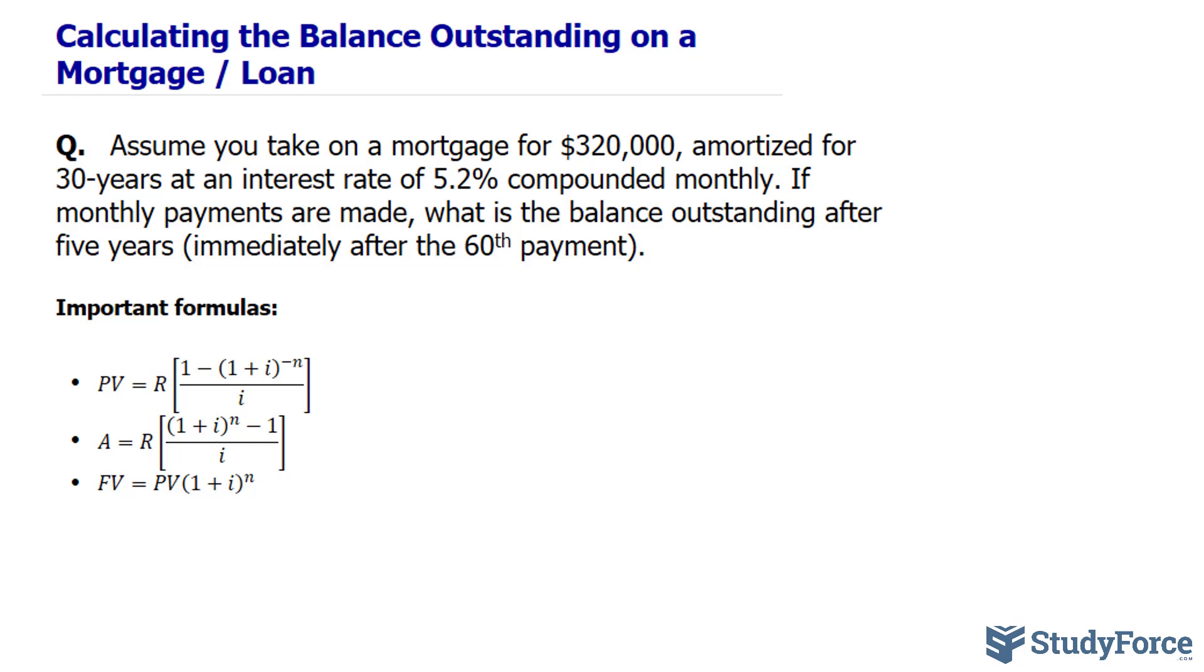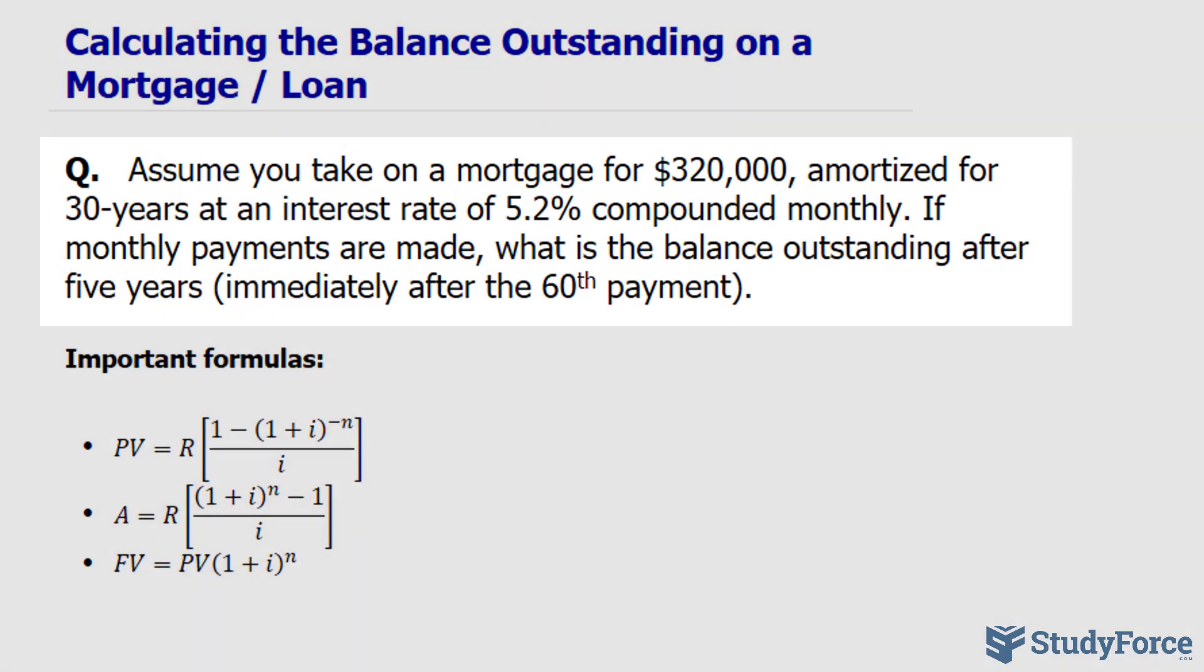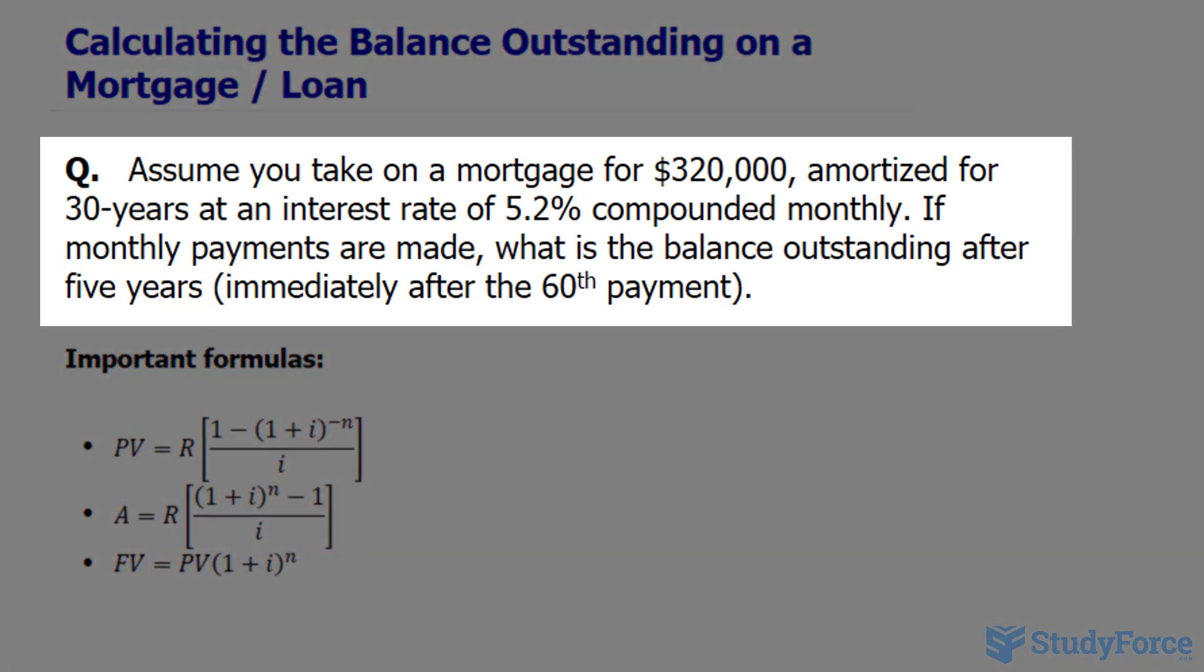Here's a fairly common situation, and you're more than welcome to manipulate these numbers so that it suits your problem. The question reads, assume you take on a mortgage for $320,000, amortized for 30 years at an interest rate of 5.2% compounded monthly.